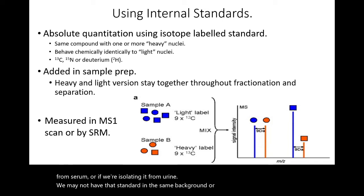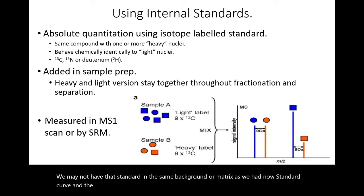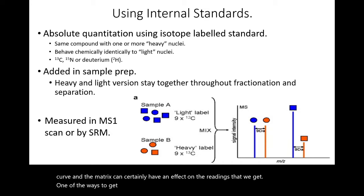The matrix can certainly have an effect on the readings that we get. One of the ways to get around this is to add an isotope-labeled standard.